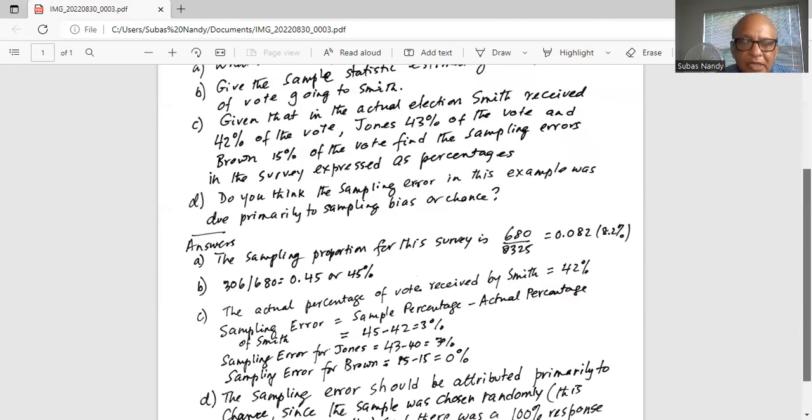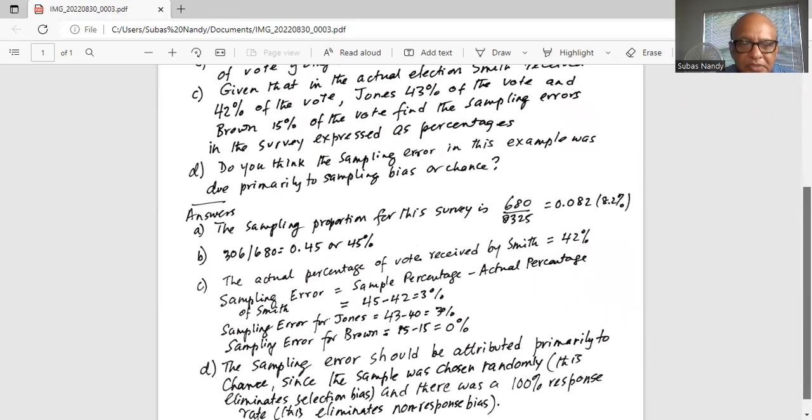And sampling error for Brown is 15 minus 15, which is 0 percent. Remember, sampling error is sample percentage minus actual percentage. So sampling percentage for Smith was 306 divided by 680, 45 percent. Actual percentage of vote received by Smith is 42 percent. So sampling error is 45 minus 42, or 3 percent.